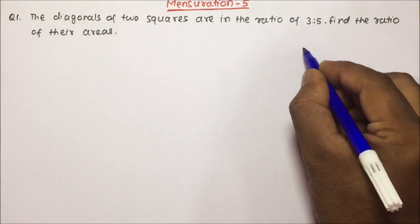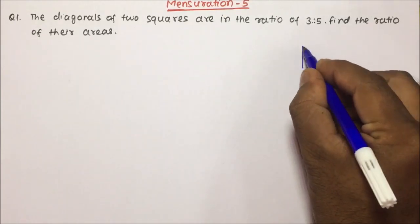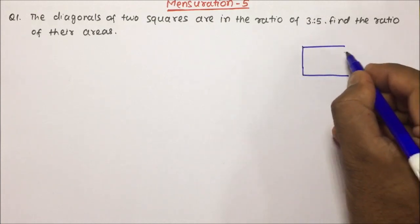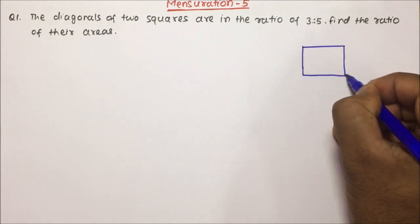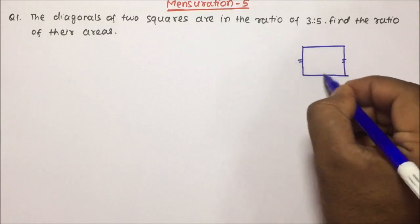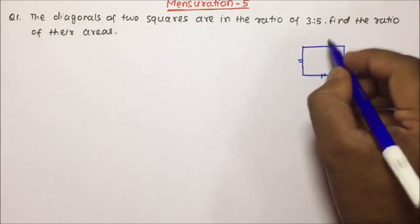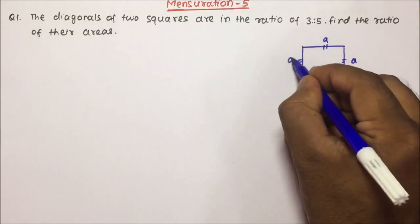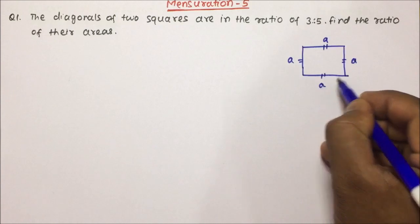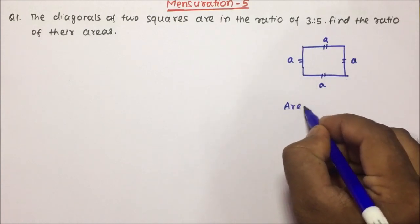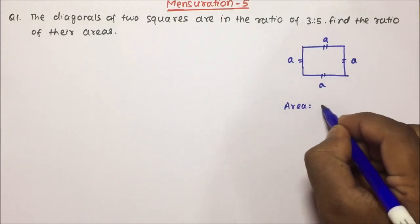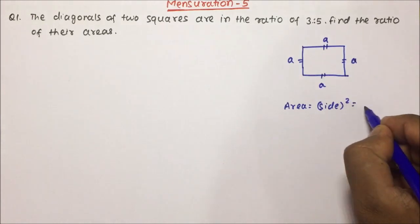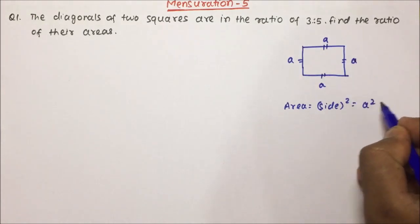Now friends, if you know about squares, then for squares all the 4 sides will be equal — A, A, A, A. And if we talk about the area, then area will be side squared, which is A².